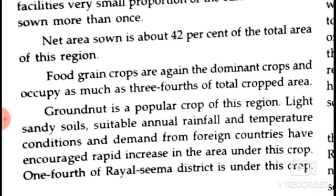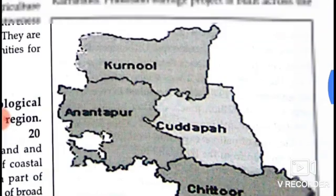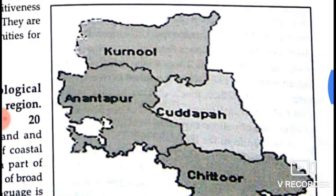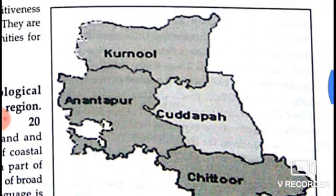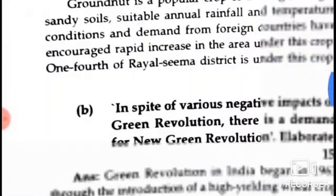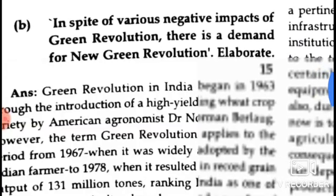Groundnut is a popular crop of this region. Light sandy soils, suitable annual rainfall and temperature conditions, and demand from foreign countries have encouraged a rapid increase in the area under this crop. One-fourth of the Rayalaseema districts are under this crop, mainly Kurnool, Kadapa, Anantapur and Chittoor districts.